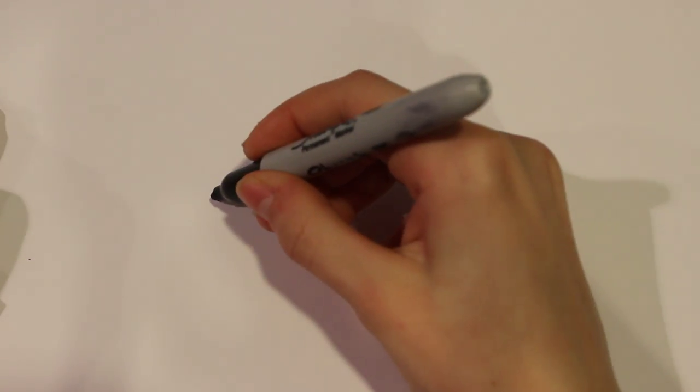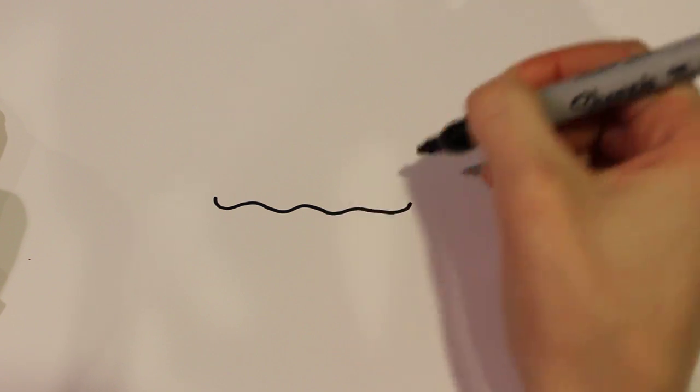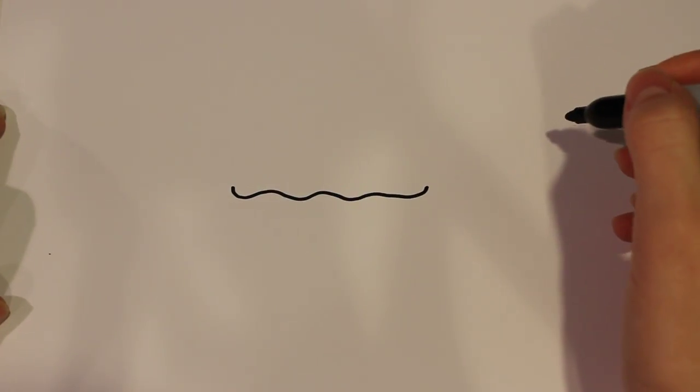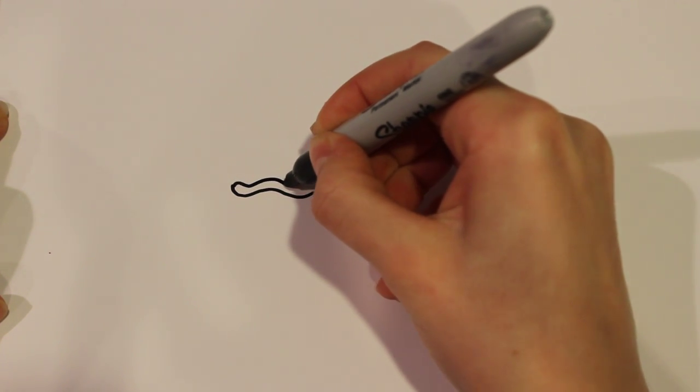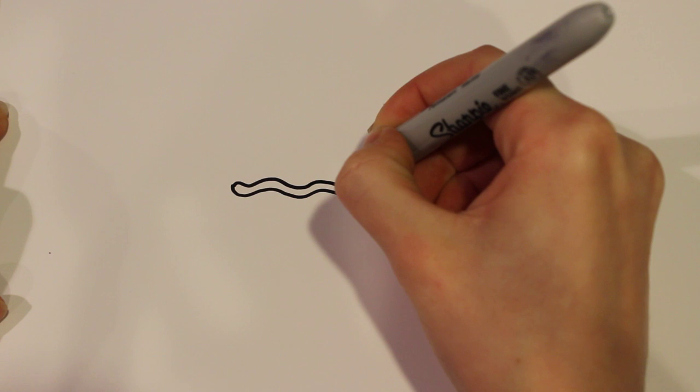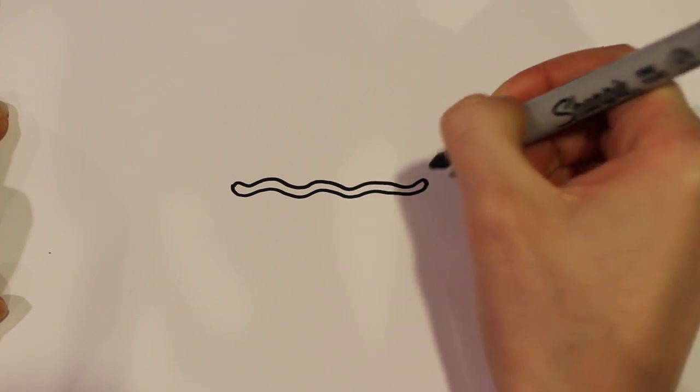First you start off by drawing a squiggly line right in the middle and that's going to be the crust. And then from there you're just going to want to trace that line right on the top with just a little bit of space and then connect it on the other side just like that.